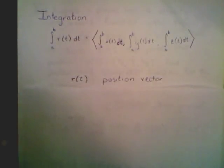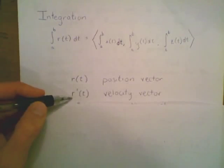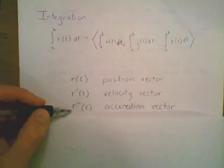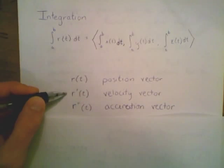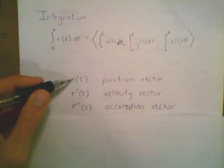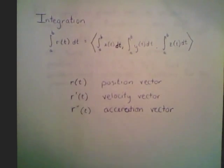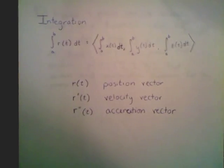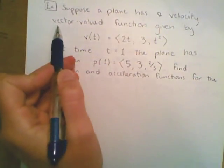Next, let's look at integration. Integration works like we want it to — much like derivatives, the integral of a vector-valued function is the integral of each of the component functions. If r of t is a position vector, then its derivative is the velocity vector and the second derivative is the acceleration vector. So if we're given an acceleration vector, we take the antiderivative to get the velocity vector, and the antiderivative of that gives back the position vector.